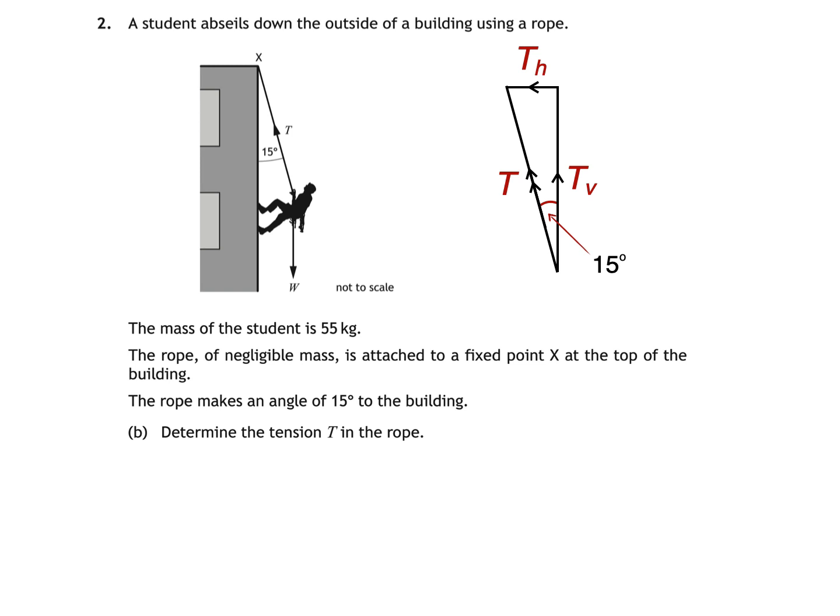It's time for a bit of trigonometry. If we look at the right angle triangle that's been drawn, we can see that the cosine of the angle is equal to Tv divided by T. We can rearrange this to make tension T the subject, by multiplying both sides by T, then dividing both sides by cos θ, giving us T equals Tv over cos θ.